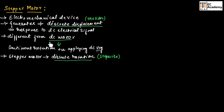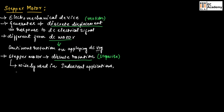DC motor produces continuous rotation while stepper motor produces stepwise rotation. The stepper motor is widely used in industrial applications, consumer electronics, robotics, control systems, etc.